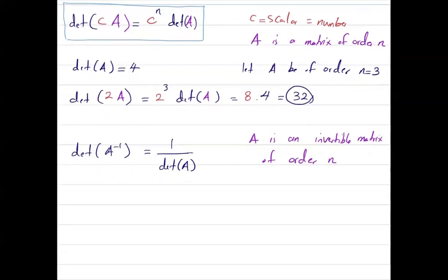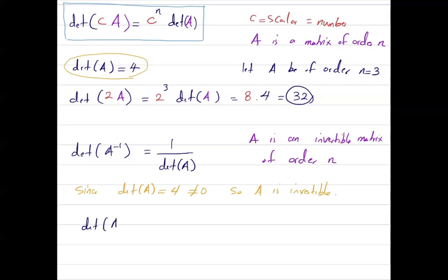Let us go back to the example. The determinant of A is equal to 4, so it is not equal to 0, meaning A is indeed an invertible matrix. If I ask you to calculate the determinant of the inverse of this matrix, by following the formula, it is 1 over the determinant of A, which is equal to 1 over 4. So this is the determinant of the inverse of the matrix.